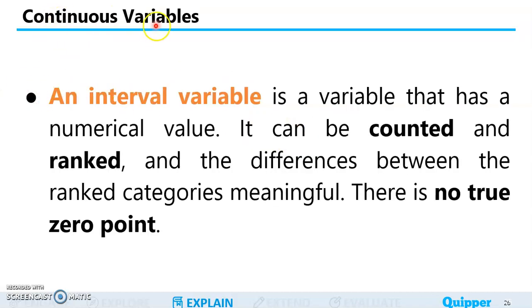Next, we have continuous variables. An interval variable is a variable that has a numerical value, unlike nominal and ordinal variables. Those are just categories, and ordinal has ranking, but the distance between the ranks is not considered. With interval, the distance between them is considered. It can be counted and ranked, and the differences between the rank categories are meaningful. It's significant. However, in this variable, there is no true zero point.